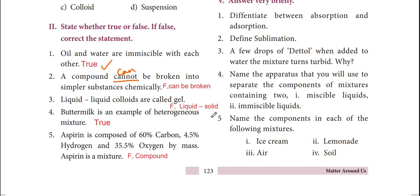Third: liquid-liquid colloids are called gel — false. Liquid-solid colloids are called gel. The tabular column is important; memorize it three to four times. Fourth: buttermilk is an example of a heterogeneous mixture — true. Fifth: aspirin is composed of 60% carbon, 4.5% hydrogen, and 35.5% oxygen by mass; aspirin is a mixture — false. Aspirin is a compound.